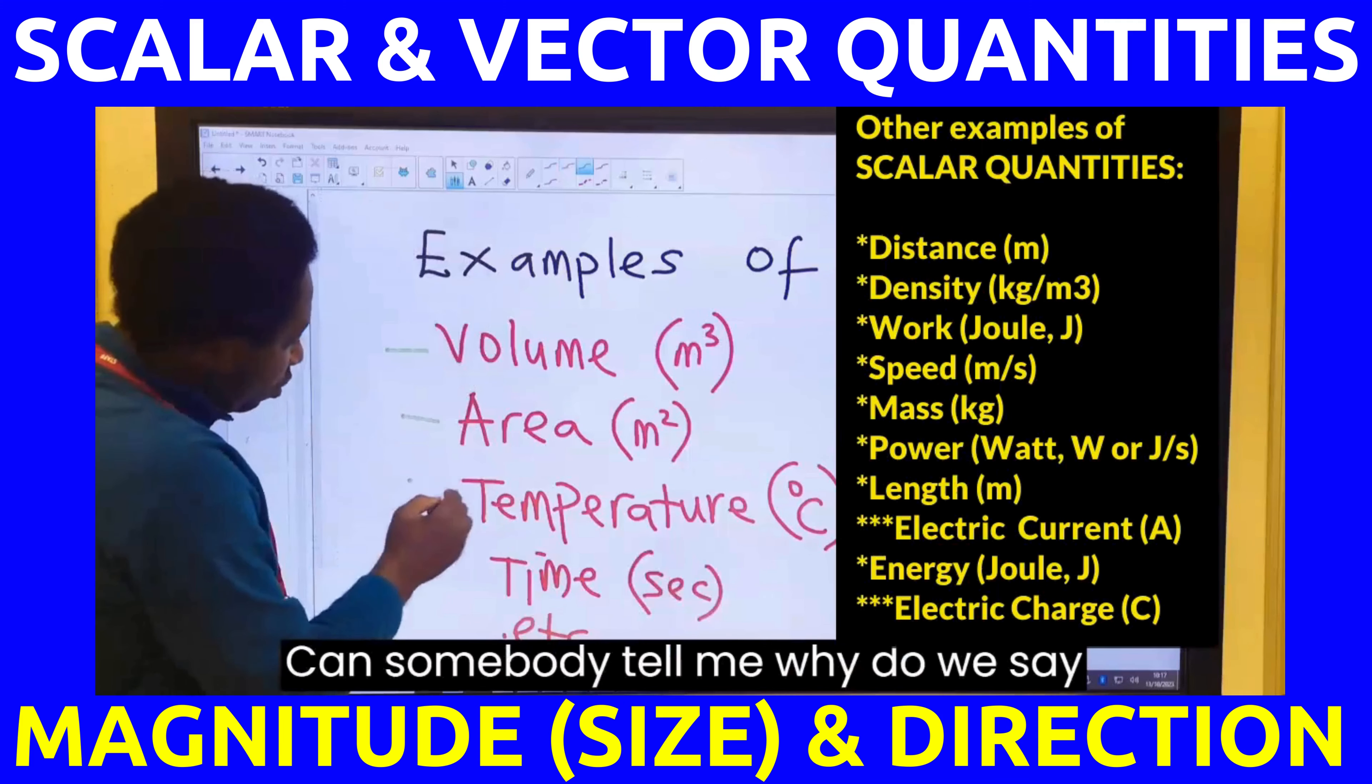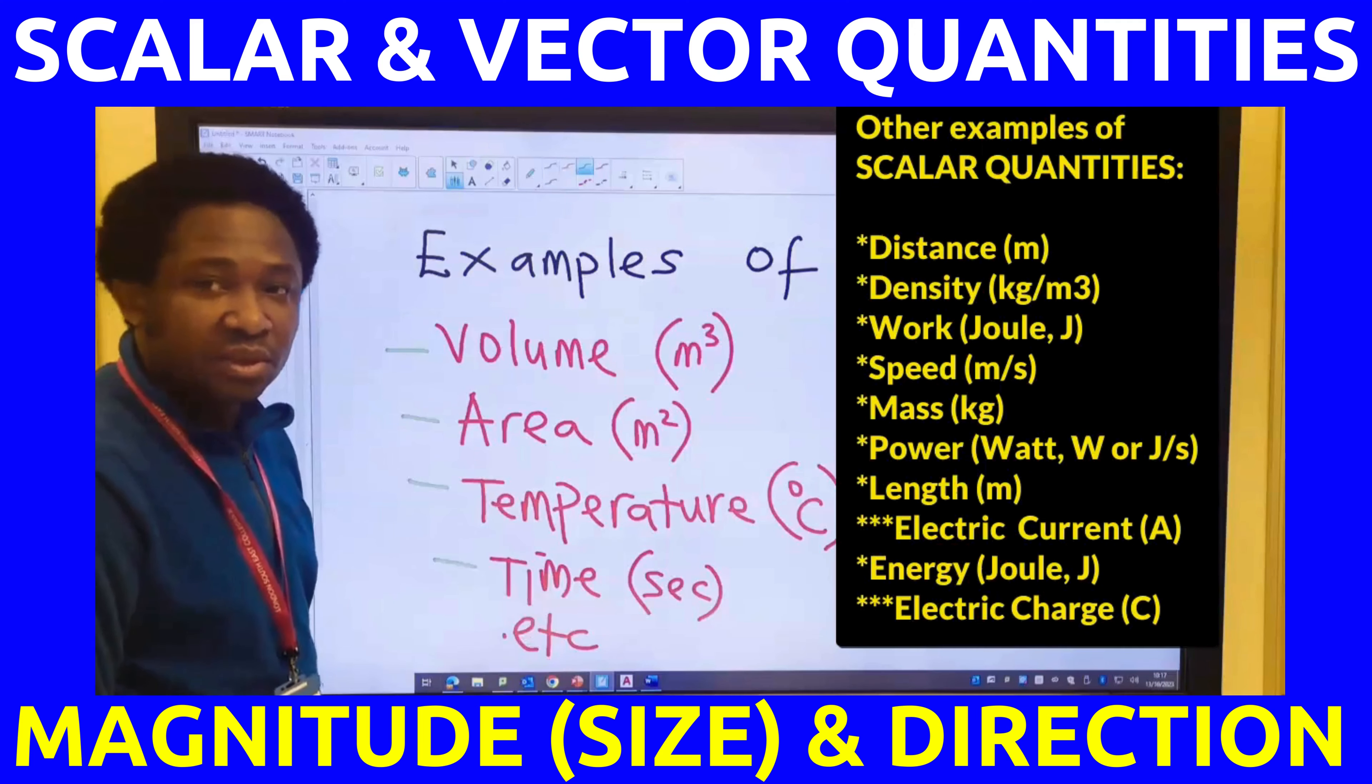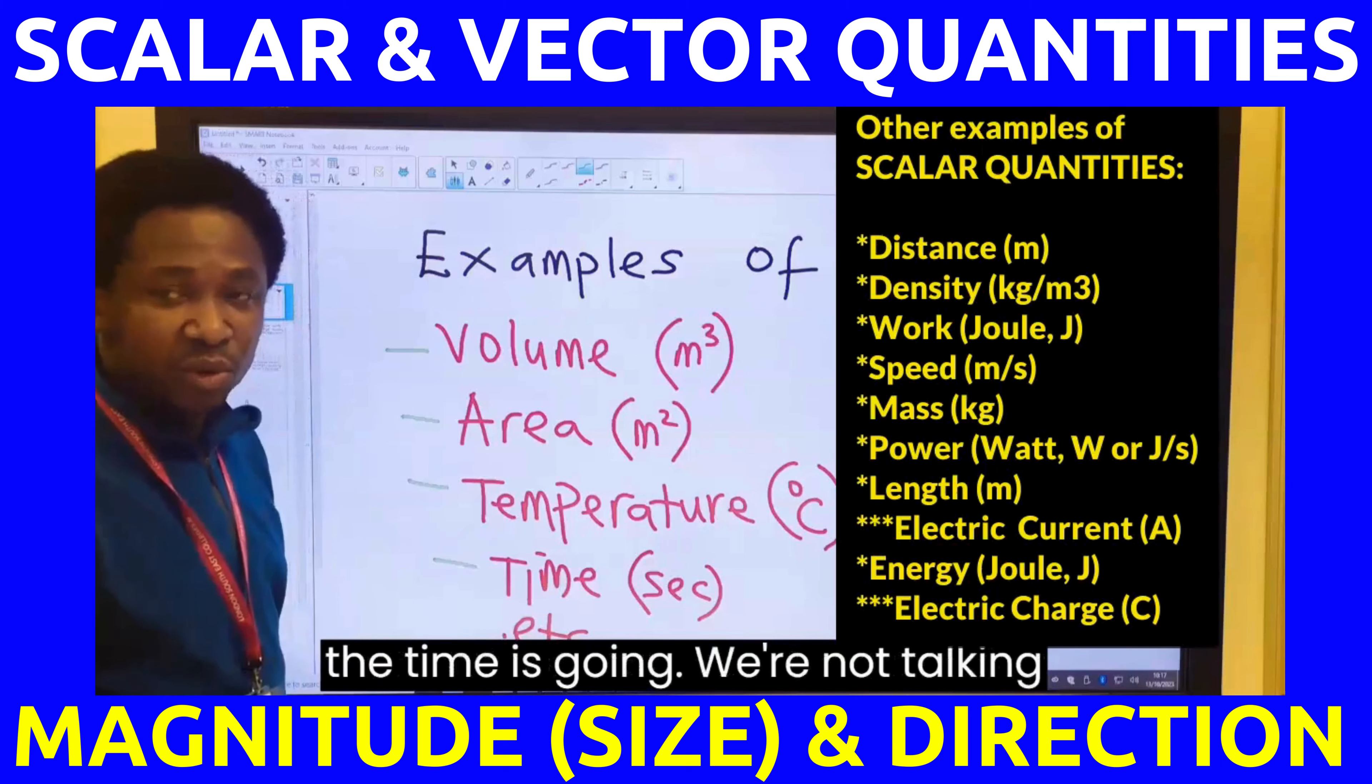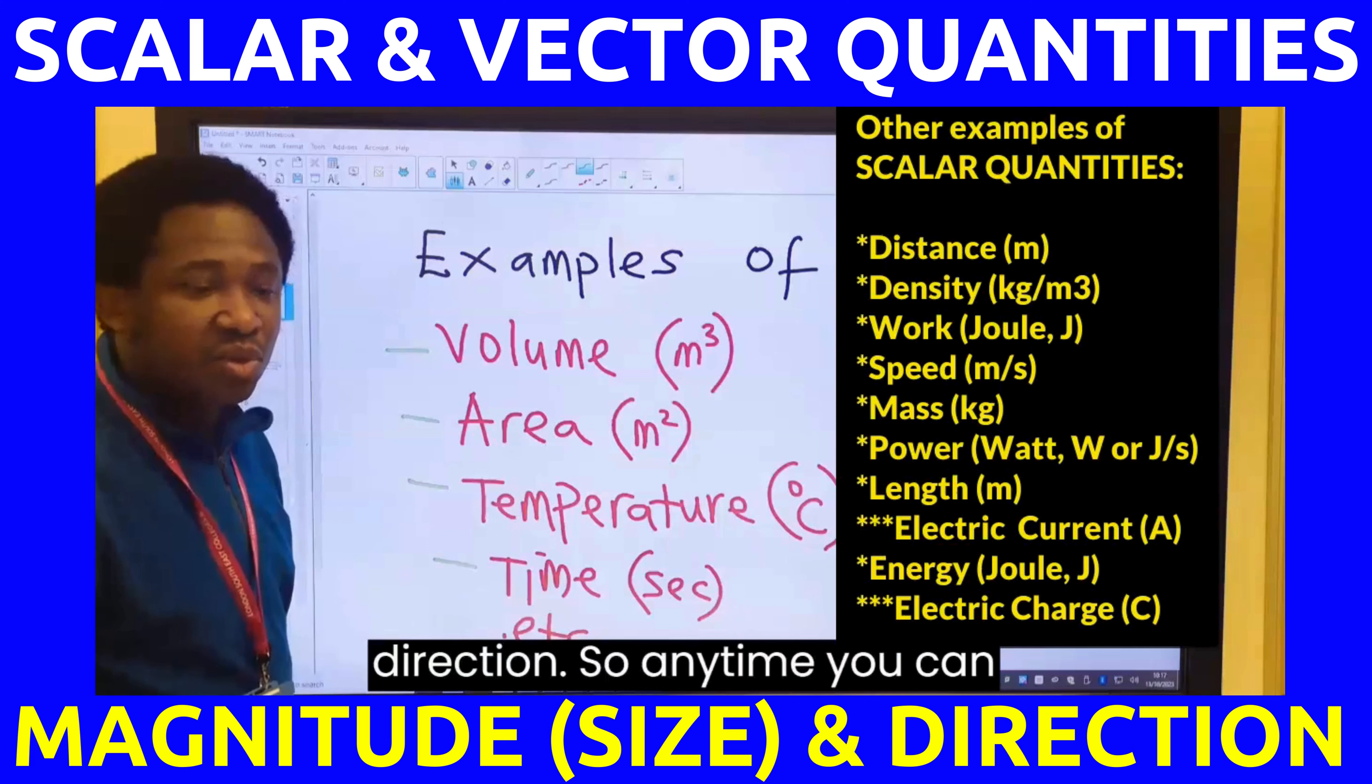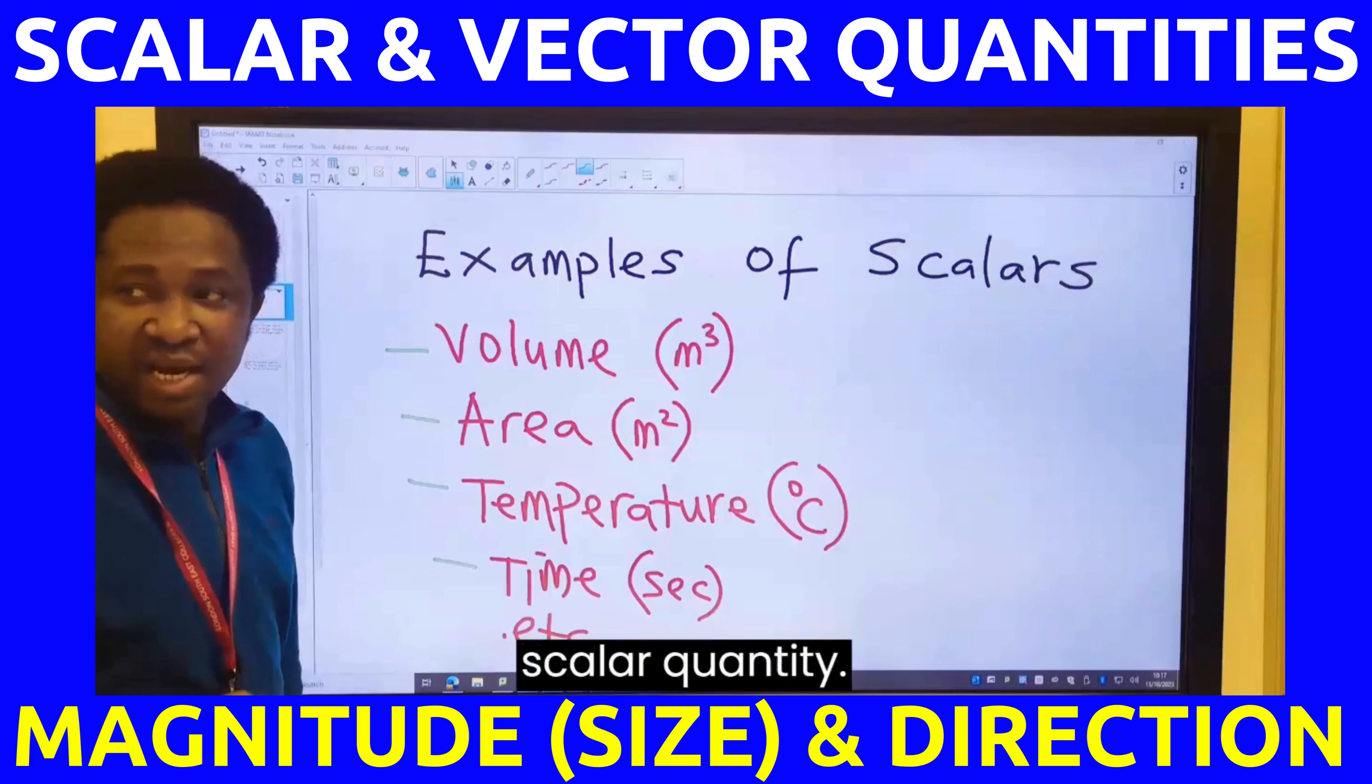Can somebody tell me why do we say that these are scalars? They don't have direction, but they have magnitude. You can tell time, but you can't tell the direction the time is going. We're not talking about the movement of the clock. You can talk about area of a land, but there is no direction. So, any time you can quantify anything without the directions, then you're talking about a scalar quantity.